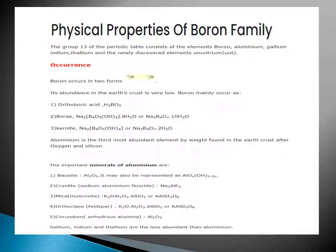Aluminium is the third most abundant element by weight found in the earth's crust, after oxygen and silicon. The important minerals of aluminium are bauxite, cryolite, mica, orthoclase, and corundum. Gallium, indium, and thallium are less abundant than aluminium.